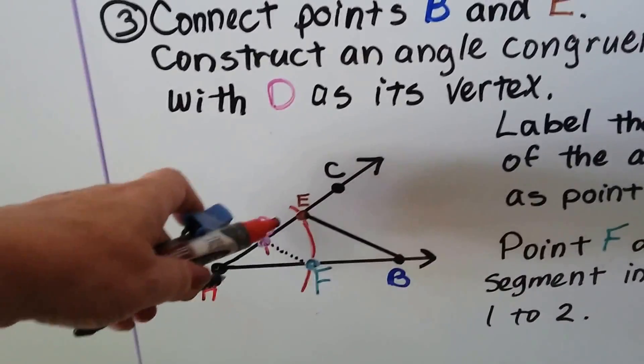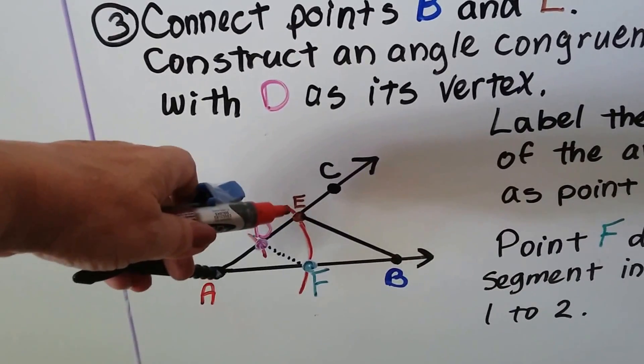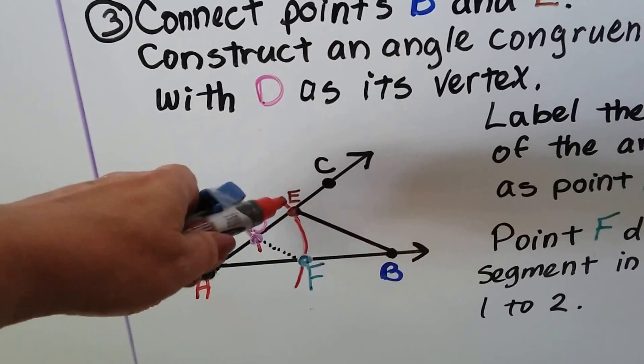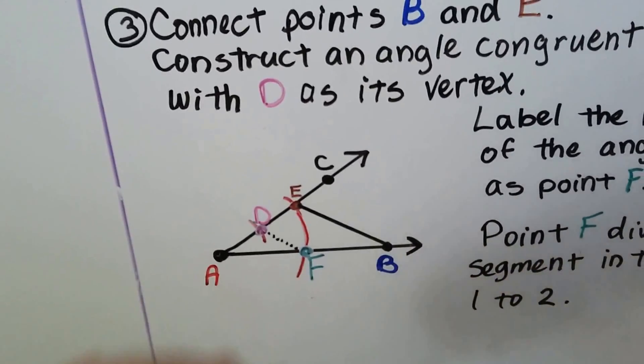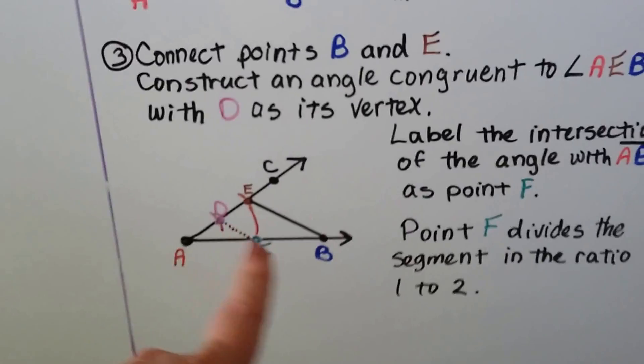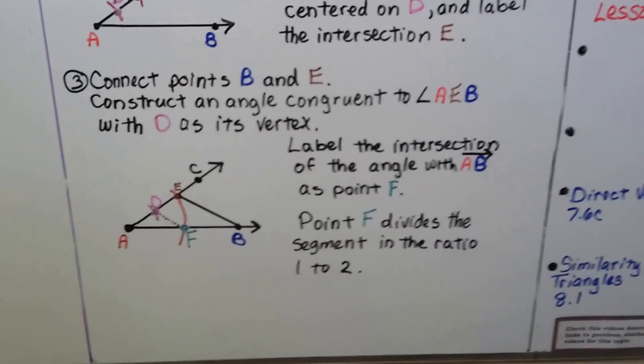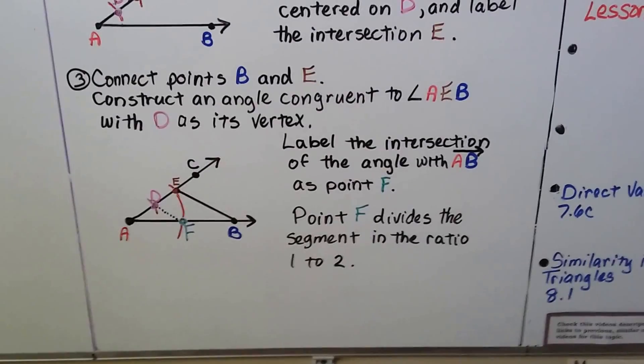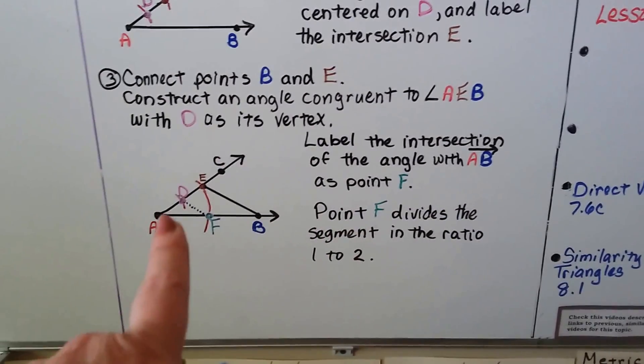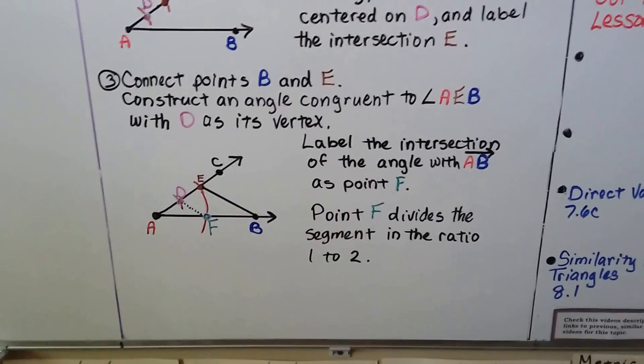And we're going to draw an arc all the way through AB. And now we've got F. And we can connect DF if we want to. We label the intersection of the angle with ray AB as point F, and point F divides the segment into the ratio 1 to 2.